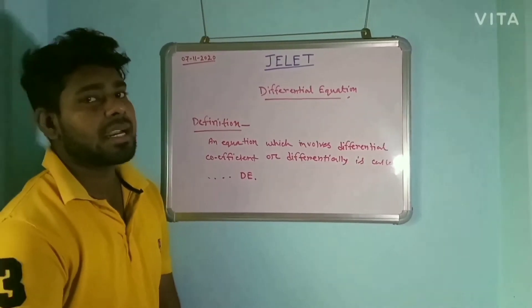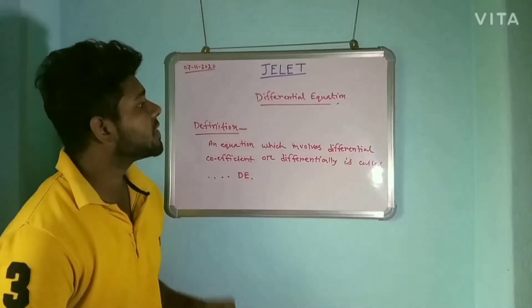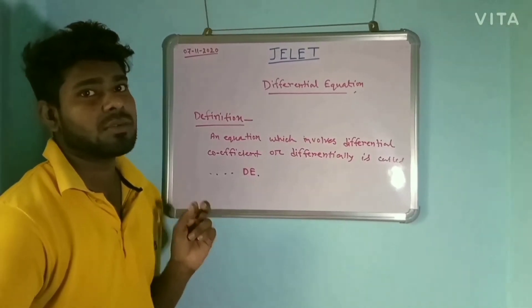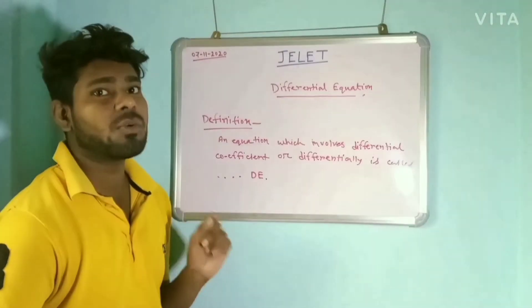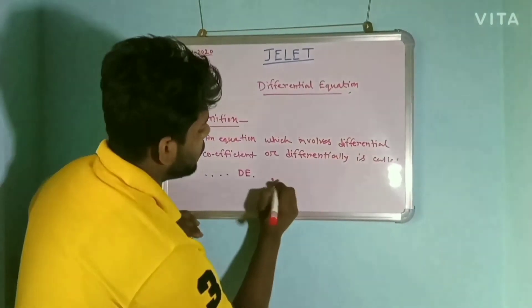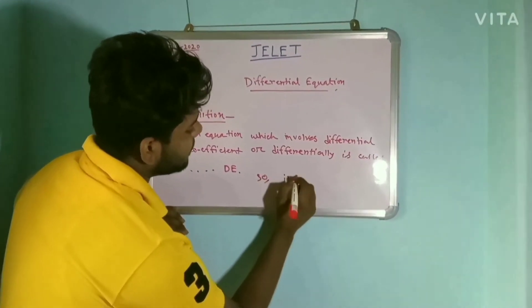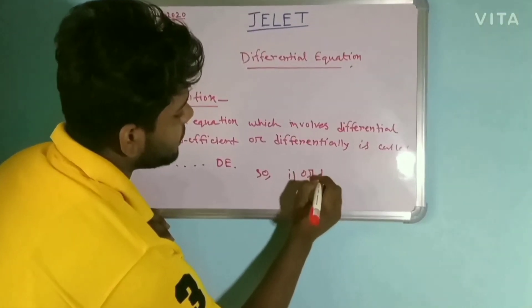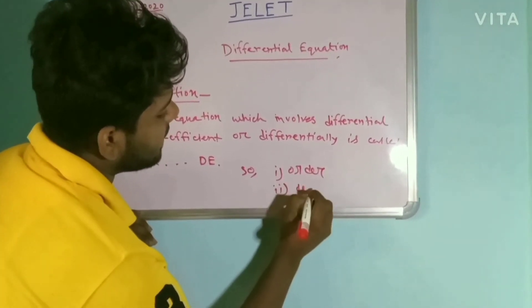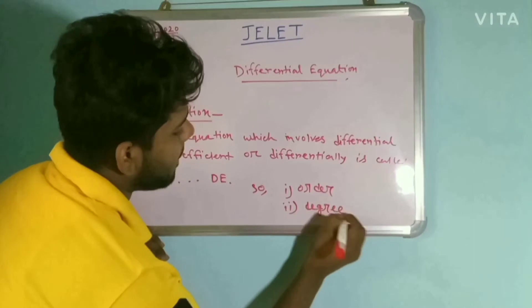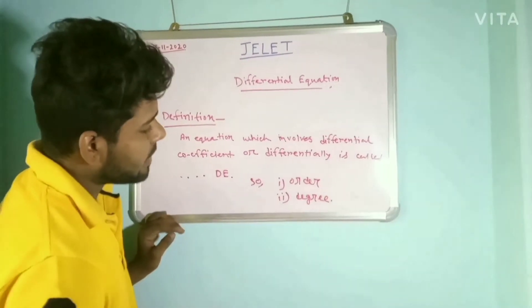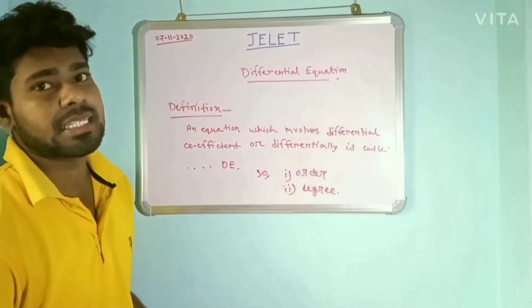When we learn about differential equations, there must be two important terms. One is order, and another is degree. So, we will look at what is order and what is degree.